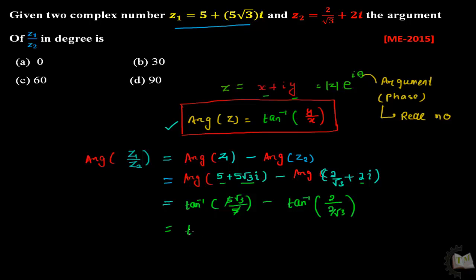5 and 5 cancel out, that is tan inverse root 3 minus, and here 2 and 2 cancel out, and it will be tan inverse root 3. And the value of tan inverse root 3 is 60 degrees minus 60 degrees, which equals 0 degrees.